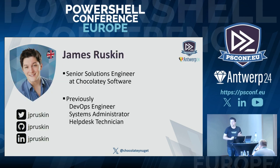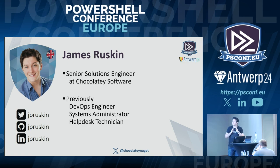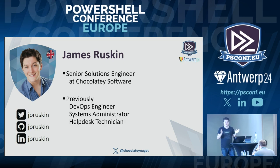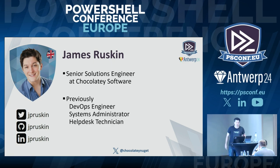Just to introduce myself, if you haven't met me already, my name is James Ruskin. I'm a senior solutions engineer at Chocolatey Software. Before that, I've been through a fair few roles you can boil down into a progression between the IT-friendly intern who happens to do a lot of packet analysis, to help desk technician, to system and network administration, to DevOps engineer, and then to my current role.